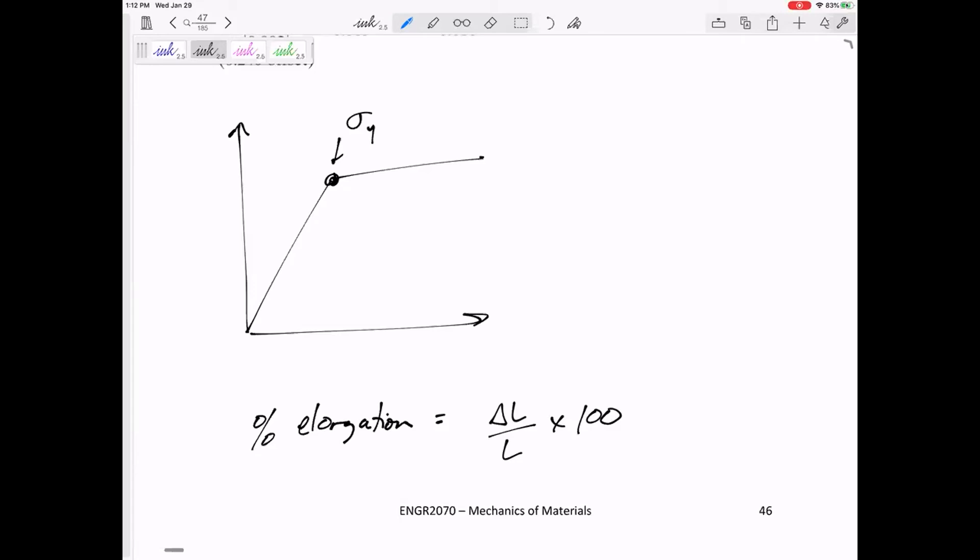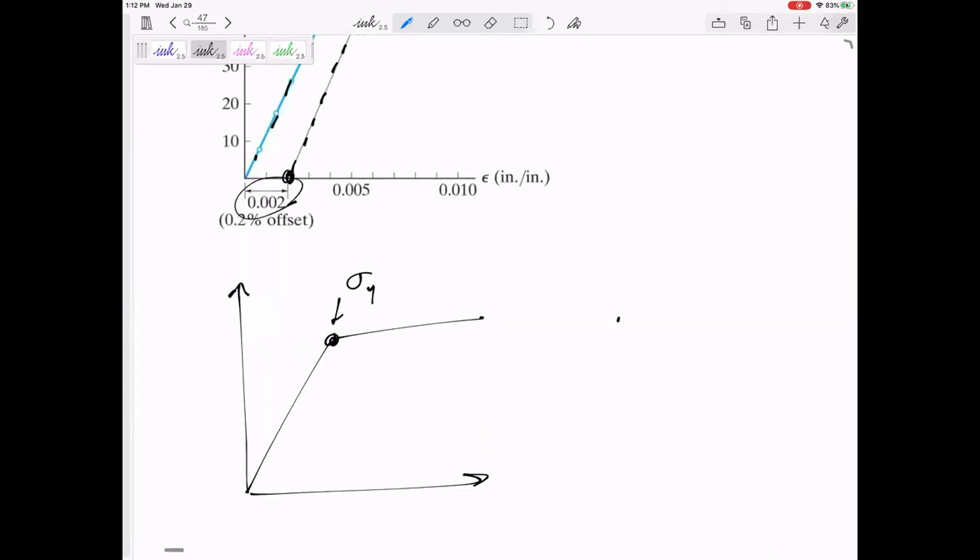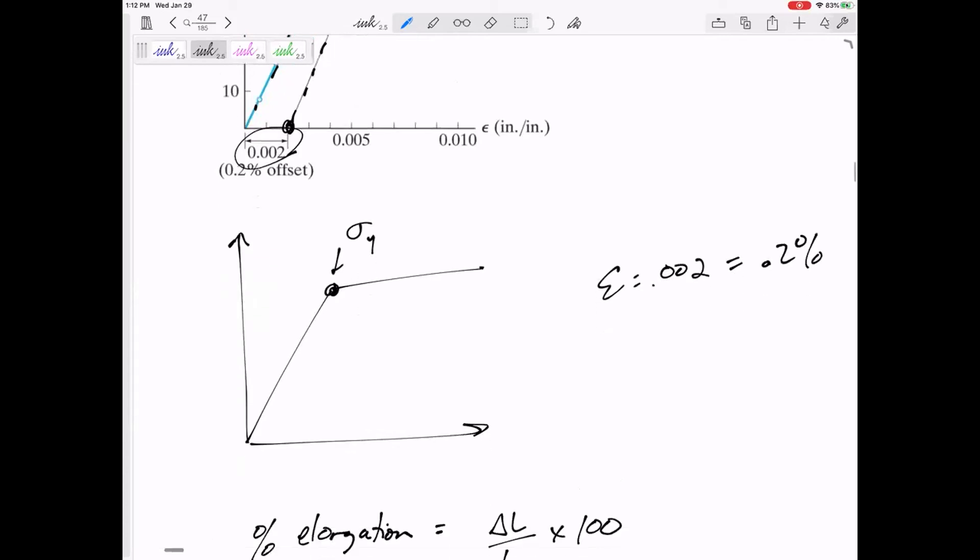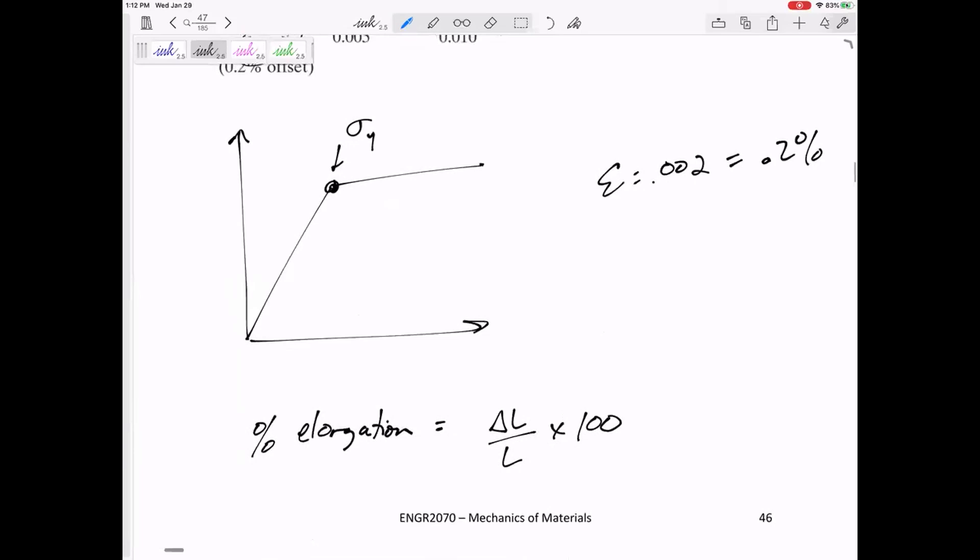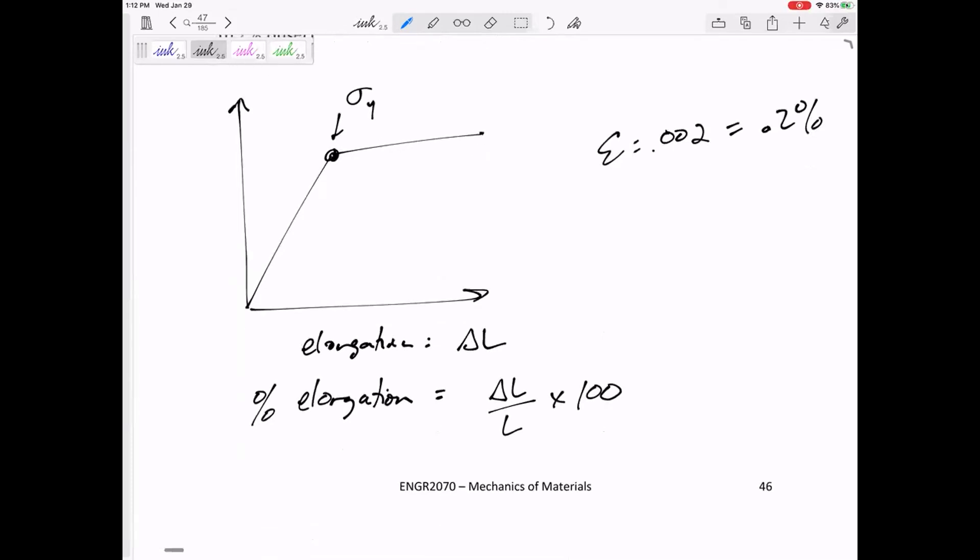Take the strain, multiply that times 100. So that's why the 0.002 – a strain of 0.002 is the same thing as 0.2% elongation.